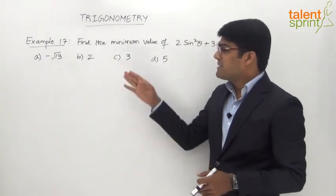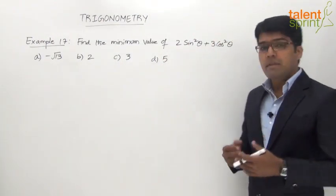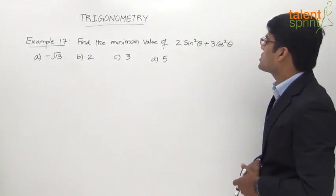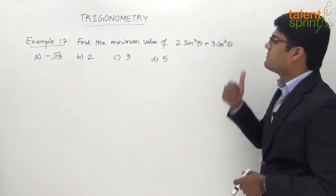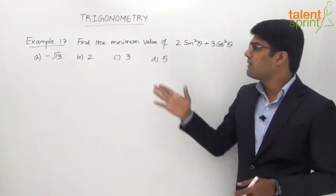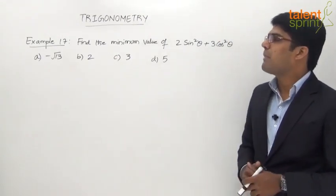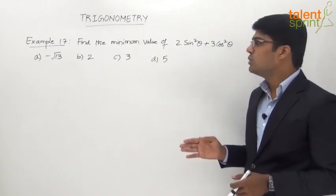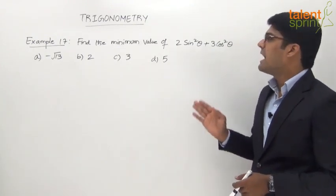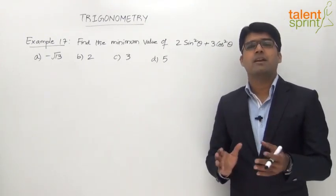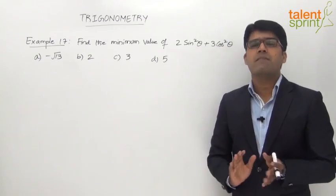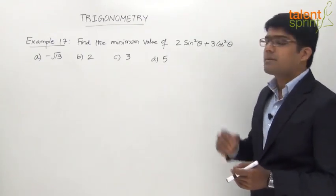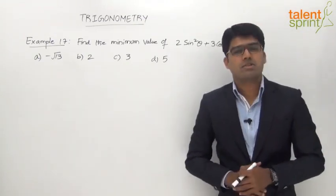Example 17: Find the minimum value of 2·sin²θ + 3·cos²θ. The given answer options are: (A) −√13, (B) 2, (C) 3, and (D) 5. We need to find out the minimum value of 2·sin²θ + 3·cos²θ.